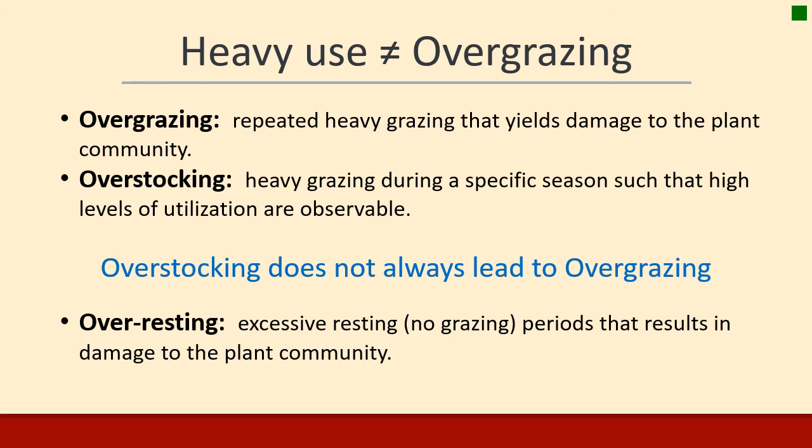On the other side of the coin, remember that rangelands are grazed ecosystems, and overresting or excessive resting from grazing can also be a problem. I've seen it in riparian areas and high-precipitation areas where if it's not grazed, it just isn't healthy — the plants can't come up through that thatch. Excessive resting can be as bad as overgrazing.